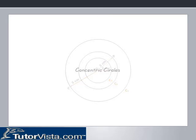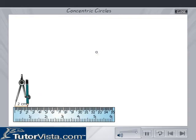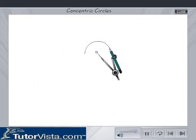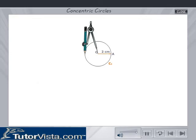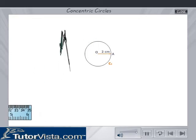Concentric circles. Draw a circle C1 with center O and radius equal to 2 cm. With the same center O and radius equal to 3 cm, draw another circle C2.